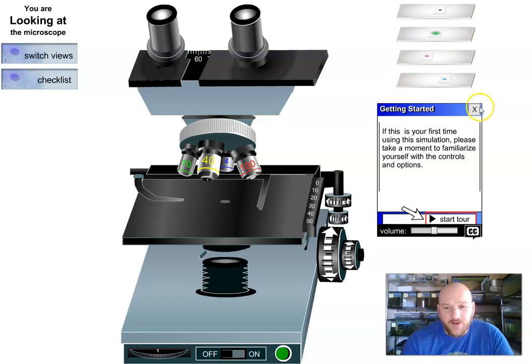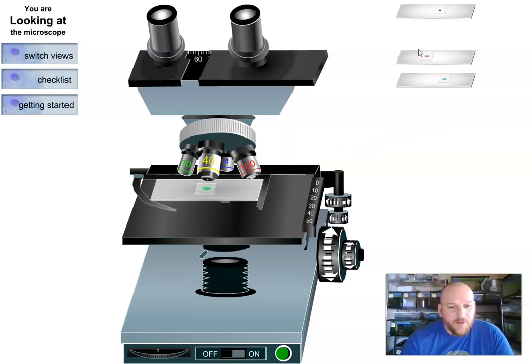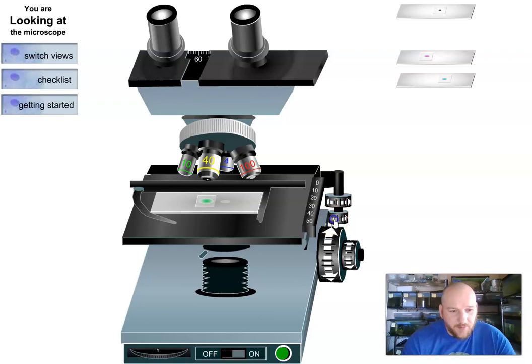The get started here gives us a tour but we're just going to go ahead and give it a shot. Let's take a look at our onion root here, so we'll click on that and drag it over. In the getting started it tells you a little bit about how to adjust things, but here we're going to try and move this little guy so it's up over the diaphragm and turn on our light source down here at the bottom.